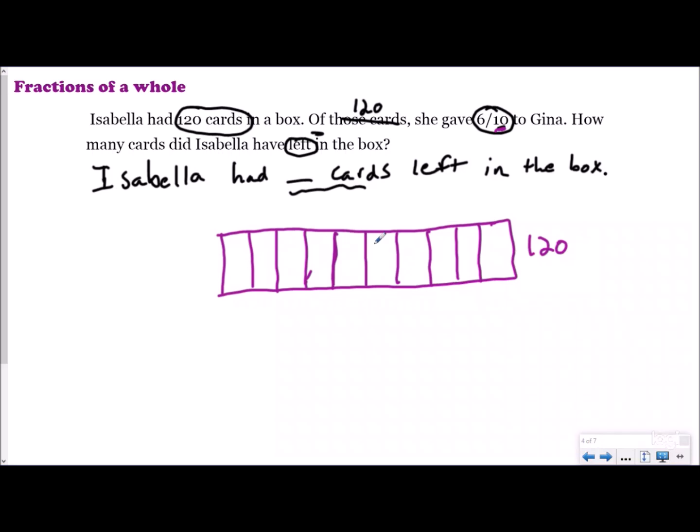So I should have 10: 1, 2, 3, 4, 5, 6, 7, 8, 9, 10. I know that of those, she gave six-tenths to Gina, so I'll label Gina right here: 1, 2, 3, 4, 5, 6. I know that obviously the rest would be left, and the best part about this is I already know that my question mark is going to be these four-tenths. I'm not looking for the six-tenths I gave to Gina.